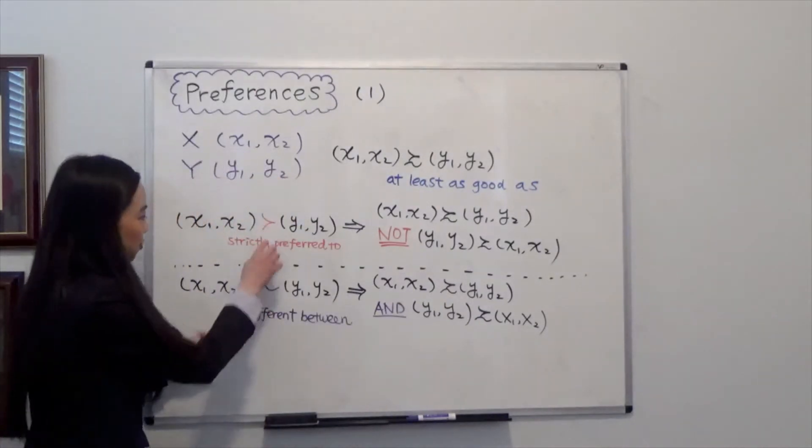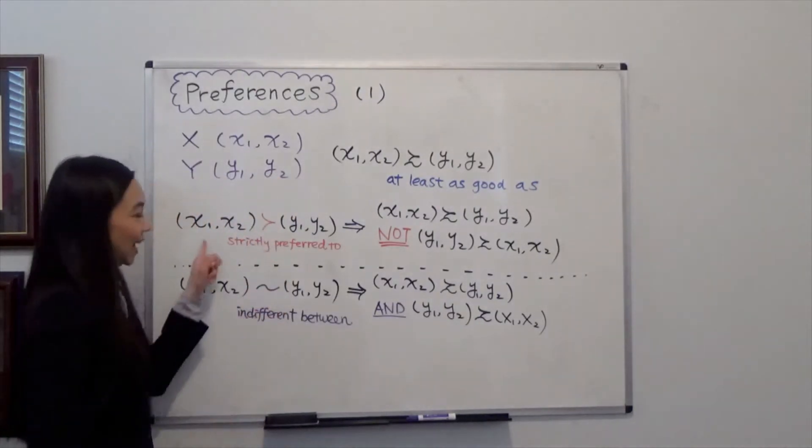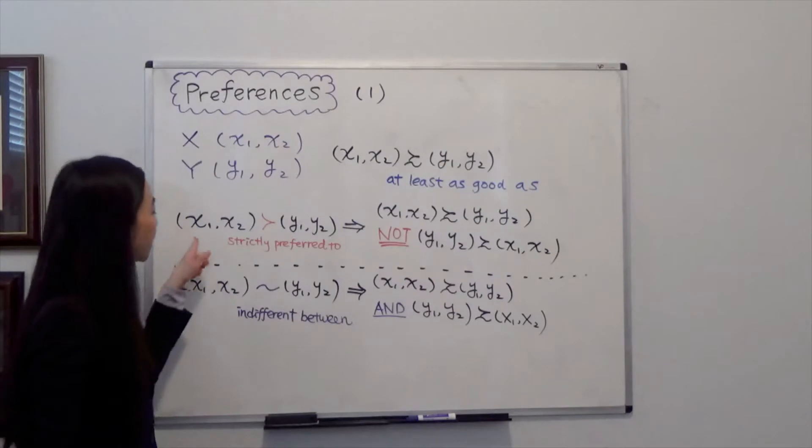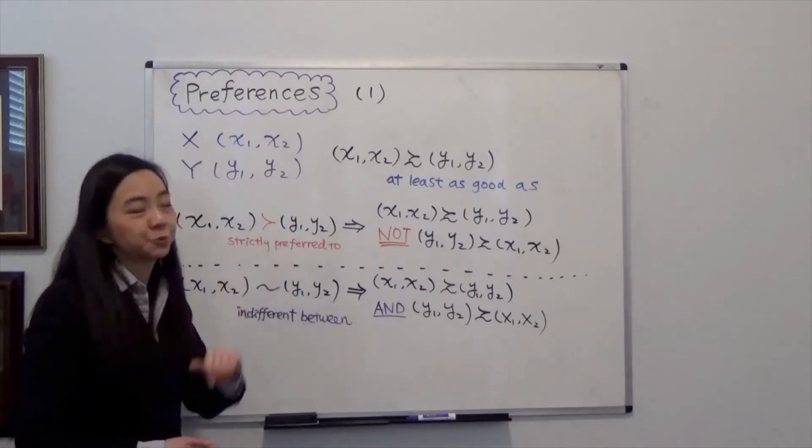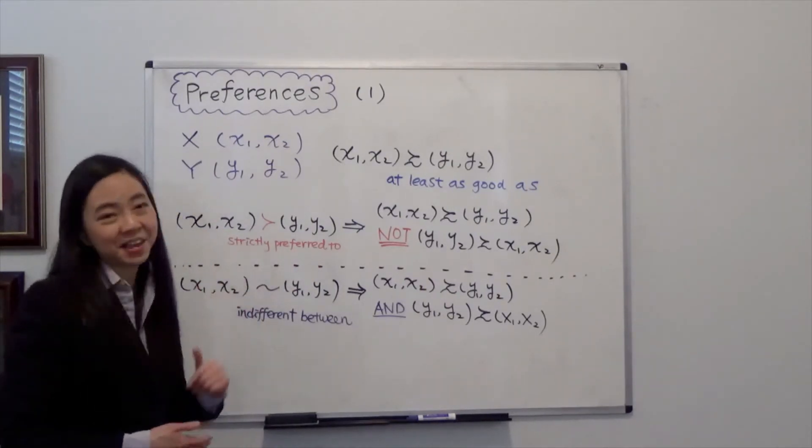You often see these two signs also. In this case, we read bundle X is strictly preferred to bundle Y. So when does that happen?